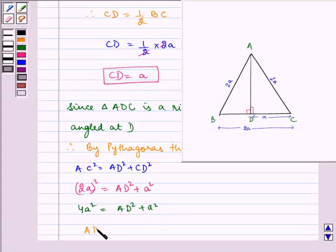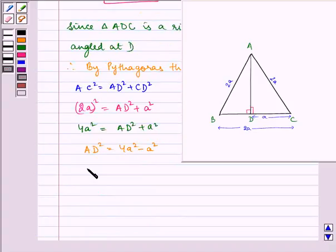Therefore, AD² is equal to 4A² minus A². Therefore, AD² is equal to 3A².